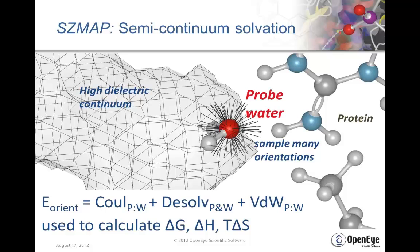We sample many orientations of water at a given point, building up an energy for each orientation, and from the spectrum of these energies, we can calculate free energies and other properties of the solvent.